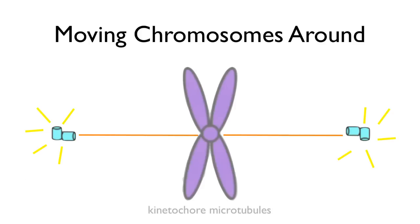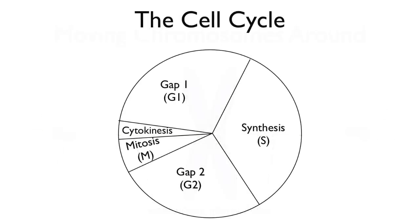We're also going to have microtubules that interact with the chromosomes themselves — those are called kinetochore microtubules. The kinetochore microtubules are attached to the centrosome on one end and attached to the chromosomes at the other via the kinetochores. So now you have a way to move the chromosomes around by changing the tension of the microtubules. We're going to see what happens when the chromosomes start to move as we go through the phases of mitosis.